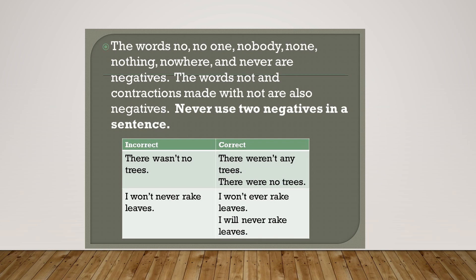The words nobody, none, nothing, nowhere, and never are negatives. The word 'not' and contractions made with 'not' are also negatives. Never use two negatives in a sentence. For example, 'There wasn't no trees' is incorrect; correct forms are 'There weren't any trees' or 'There were no trees.' Similarly, 'I won't never rake leaves' should be 'I won't ever rake leaves' or 'I will never rake leaves.' We cannot use two negative words together.